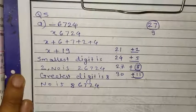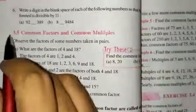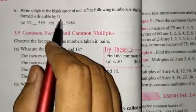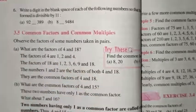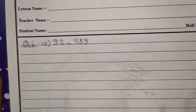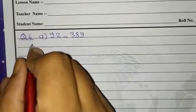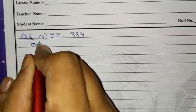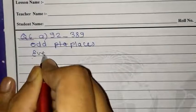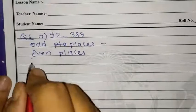Now our next question is question number 6: Write the digit in the blank space of each of the following numbers so that the number formed is divisible by 11. You know the property of 11 — how we can test whether a number is divisible by 11 or not. Two questions have been given and we have to find the missing number. Whenever you solve the divisibility test of 11, you have to find the even and odd place digits.